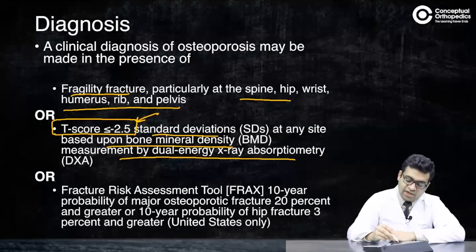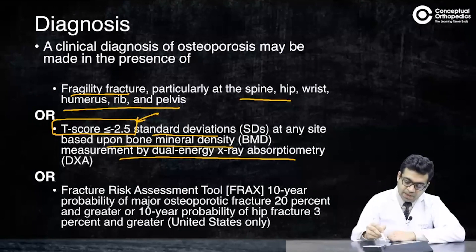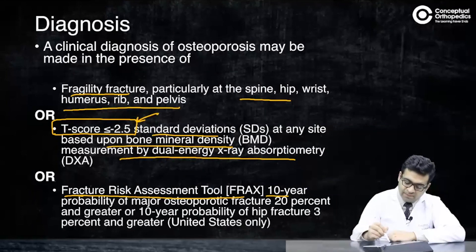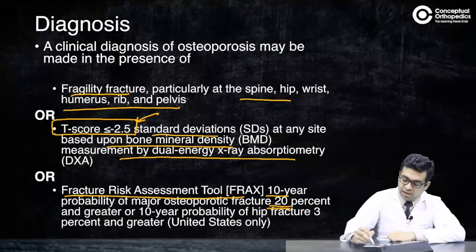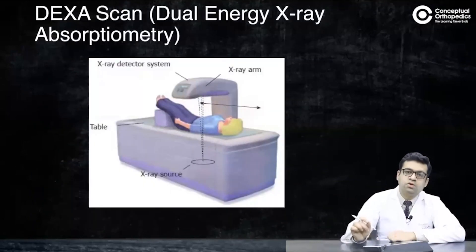If the T-score is less than minus 2.5 — that is, more negative than minus 2.5 — we call it osteoporosis. Alternatively, if the T-score is not less than minus 2.5 but you perform FRAX scoring and find that the 10-year probability of a major osteoporotic fracture is 20% or more, or the 10-year probability of a hip fracture is 3% or more, you can also label the patient as having osteoporosis.